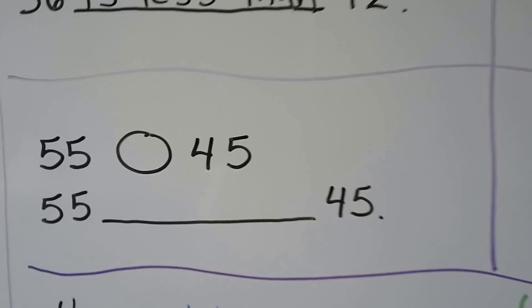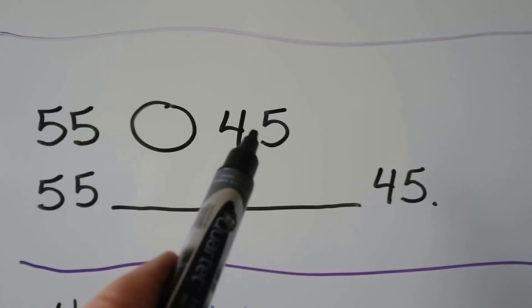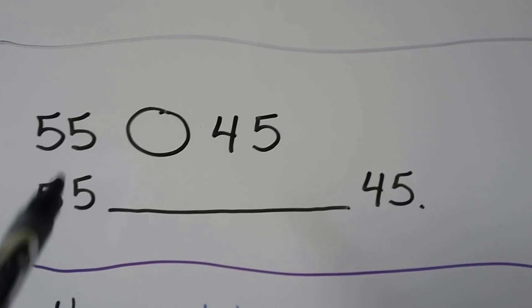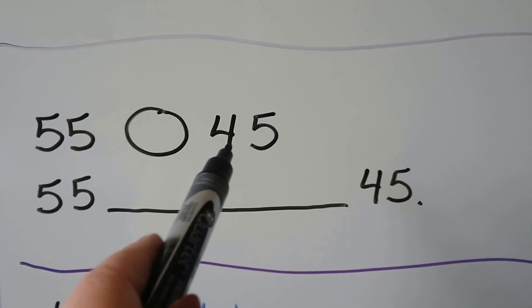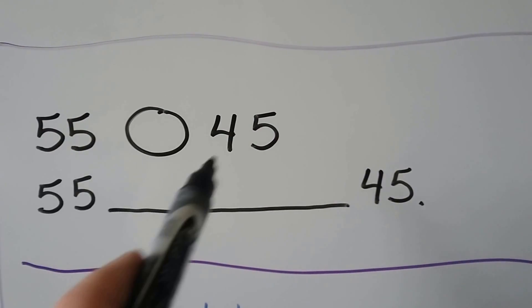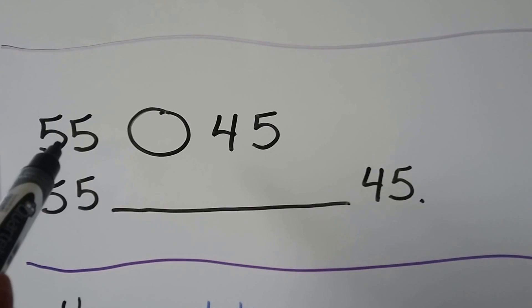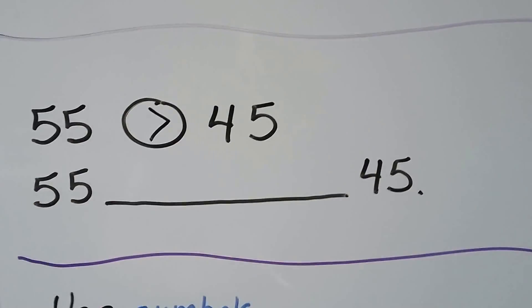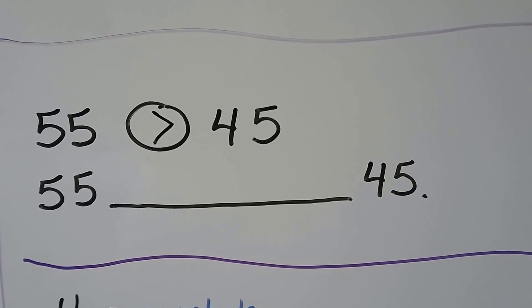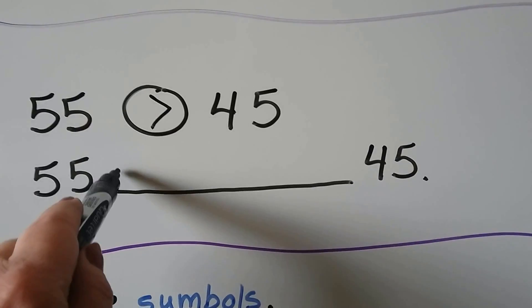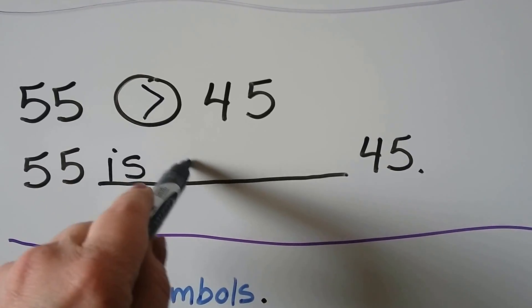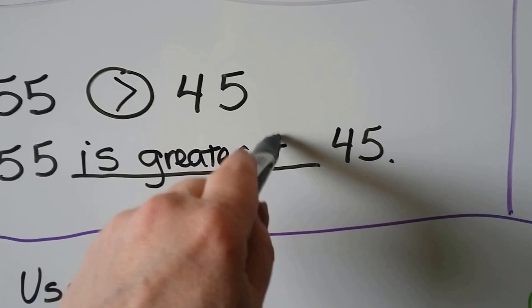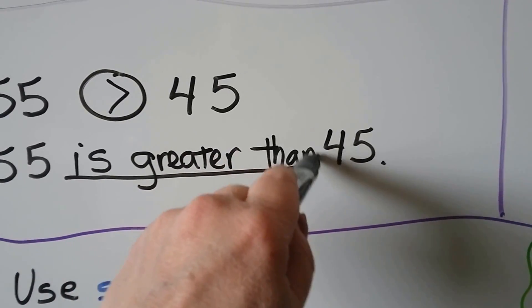Here we have 55 and 45. First we compare the tens — this has five tens, this has four tens, and five is more than four. That means 55 is greater than 45, and we can write 55 is greater than 45.